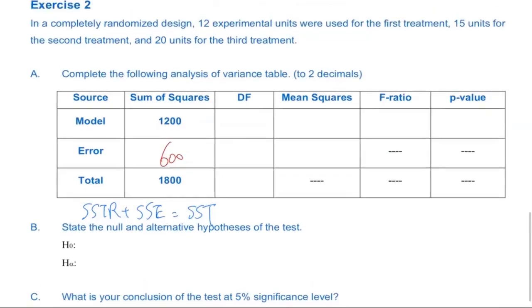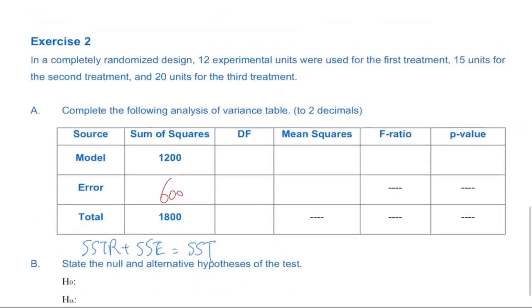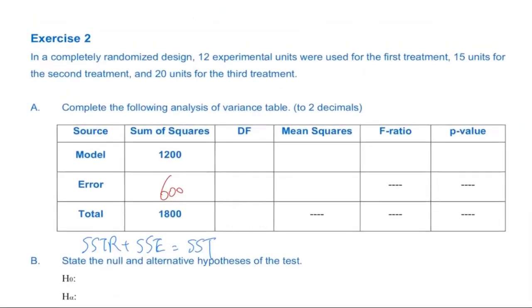So what we want to do next is we try to fill in the degrees of freedom column. So this part is not difficult. And I want to start from the very last part. Remember, the very last part is gonna be Nt minus 1. Nt represents the total number of observations. So I used 12 for the first treatment, I used 15 for the second, I used 20 for the last treatment. So what is the total number of experimental units we collected here? All you need to do... 47. Excellent. Add up those three numbers. That's gonna give you 47. And so 47 minus 1, that's 46.